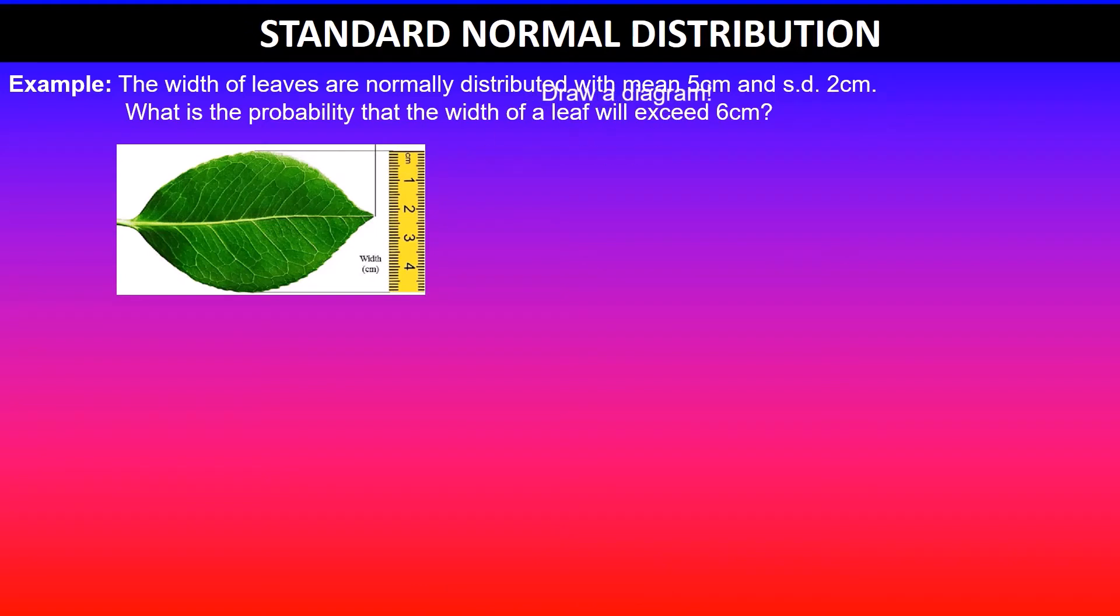First, draw the graph. In this case, we're looking at the probability that will exceed 6cm, so x is greater than 6. We've got the mean value 5, the x value is 6, and since it's greater than 6, we shade on the right-hand side.